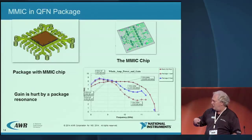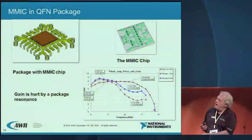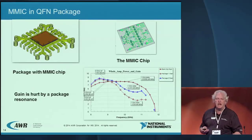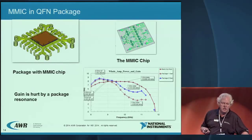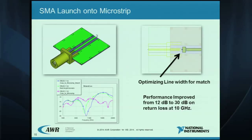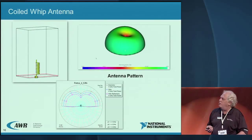Here is an example of a MMIC in a quad flat no-lead package. The MMIC was first simulated as a raw chip using harmonic balance. The QFN package is one of those P cells, and they simulate the combined structure all in the 2D editor. Here's the MMIC performance — power output — and the curve with the package shows a big degradation due to a package resonance at 9.5 GHz, so you know you have to change it. Another example: optimizing the line width for an SMA connector launch gives improved performance. And my little coiled antenna — never drew it, just two shapes, rotate very quickly, get the antenna patterns.